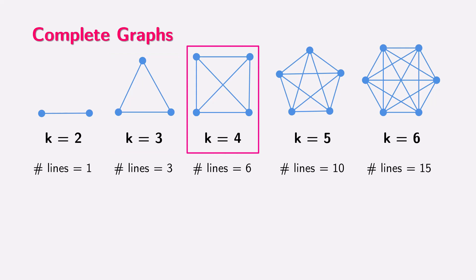Then we move to K4 with four points. Here, every point connects to all three other points, giving us six lines. For K5, we have five points, with each point connected to four others. This results in ten lines. Finally, we have K6 with six points. Each point is connected to five others, creating 15 lines in total.